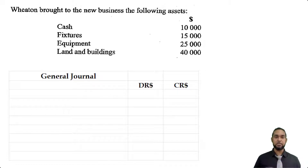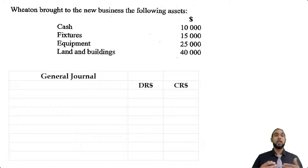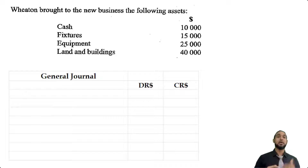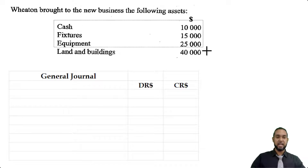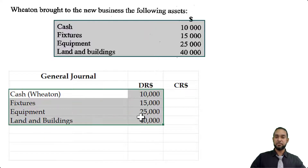When you're recording the opening entries, partners are bringing in their capital — they're contributing assets. Any resource the owner puts in is capital, but the capital can either provide money to buy assets or the assets itself. When assets are coming in, the asset values or balances are increasing, and to record increases in assets we have to debit. Wheaton is bringing in four assets: cash, fixtures, equipment, and land and buildings. When making general journal entries, you put your debit entries first.